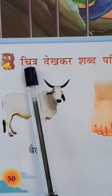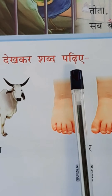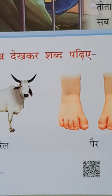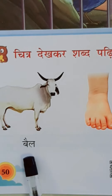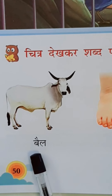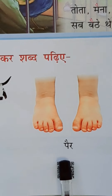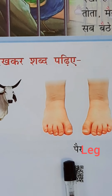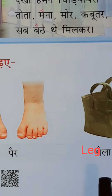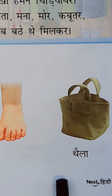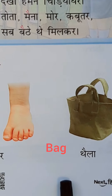Chitra dekhkar shabd padhiyye. Bail — ox. Pair — leg. Daila — bag.